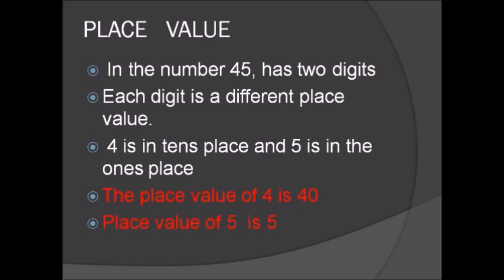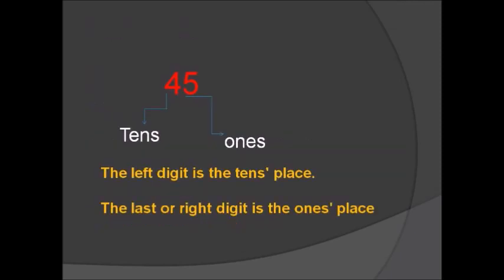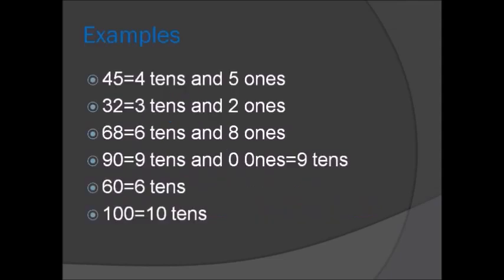The place value of four is forty. Place value of five is five. Four is the tens and five is the ones. The left digit is the tens place. The last or right digit is the ones place.